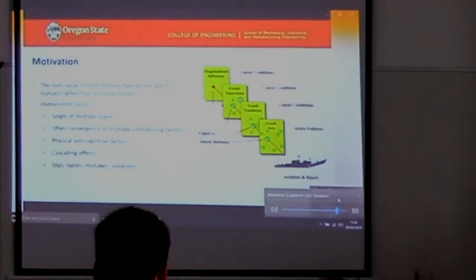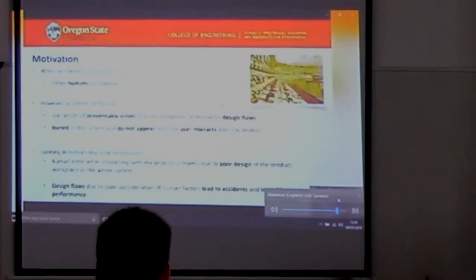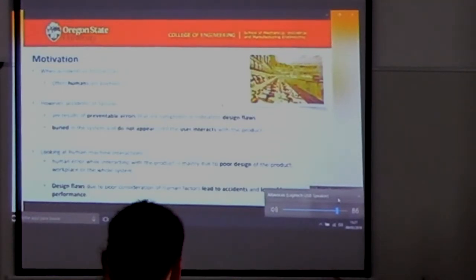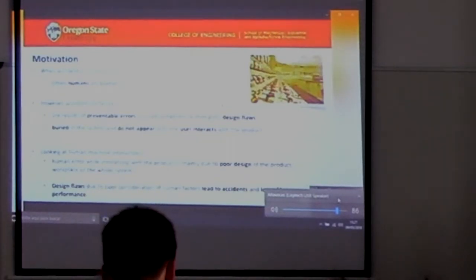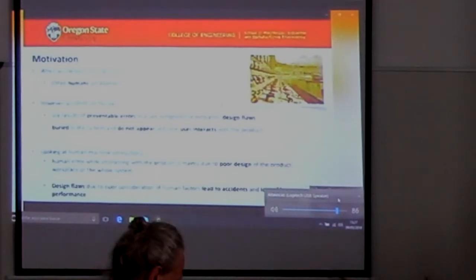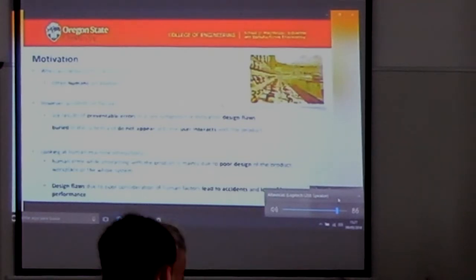What happens in most cases is we engineers ultimately blame humans as being the root causes of problems. But interestingly, most of these problems are happening because of preventable errors which are system indicators or indicators of design flaws. They are often created in the system and let humans interact with the product or the machinery.